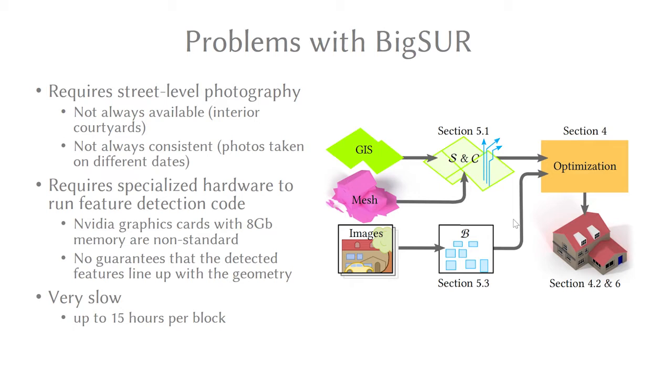To outline these limitations, Big Sur requires large amounts of street level photography. This is classically Google Street View Photos and the problem with this data source is that it isn't always available. Often it's not possible to get access to all sides of the building, or you're not able to get into, for example, the interior courtyards of larger urban structures.